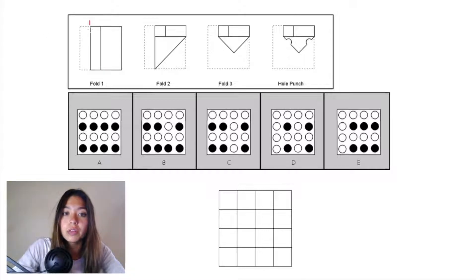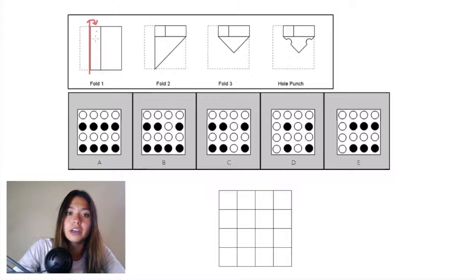Starting with fold one, we have a vertical plane and we're folding this left panel of paper over that vertical plane to this panel right here.